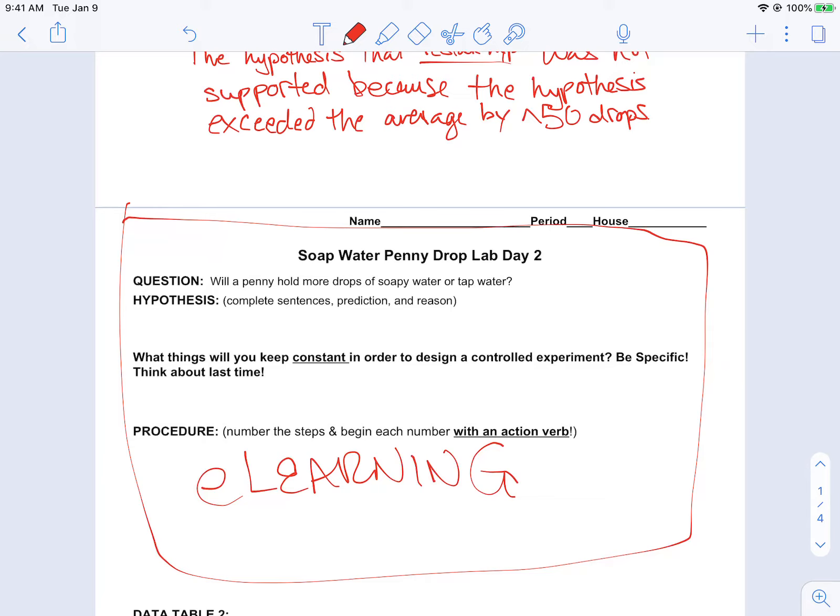The question is done for you. The hypothesis, again, write a testable statement. And then for the constants, make sure that you are looking at what could be the same. If we were to compare how many drops of tap water we can get onto a penny versus soapy water. That's it.